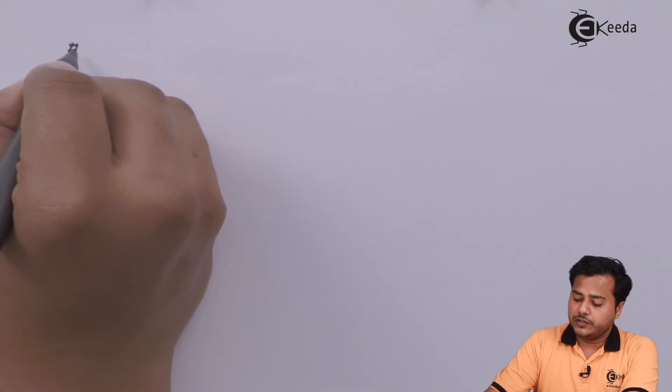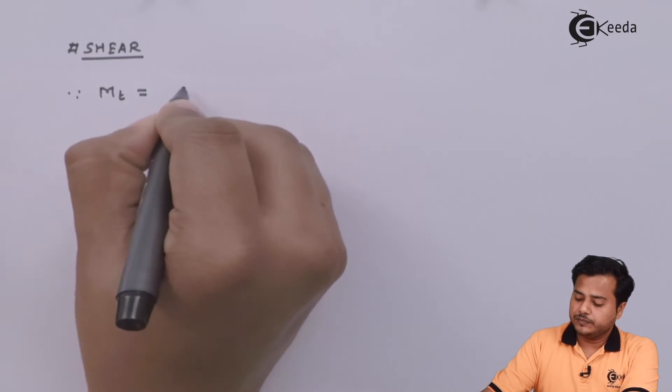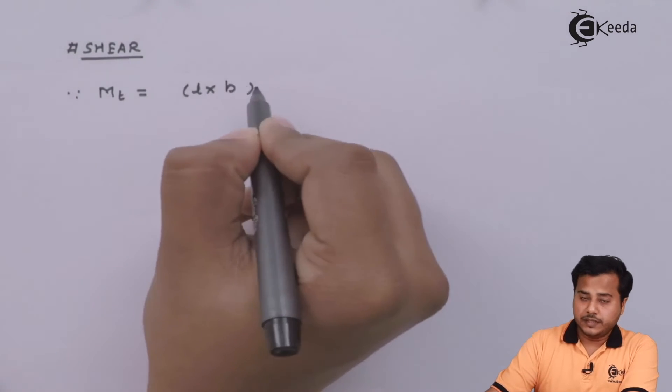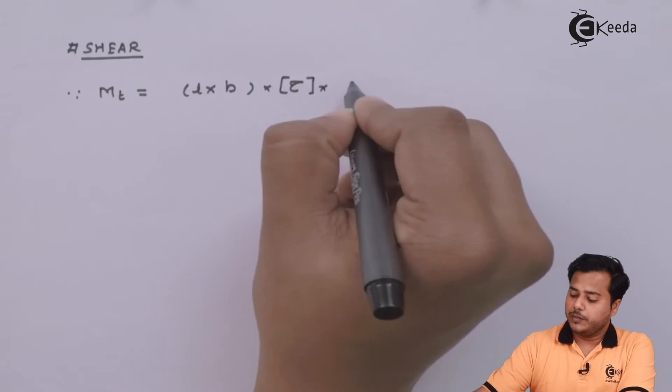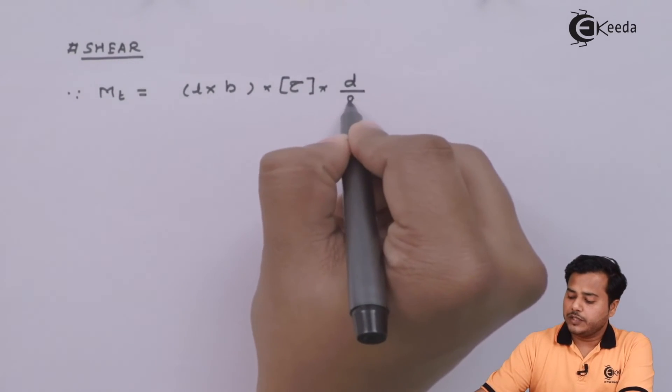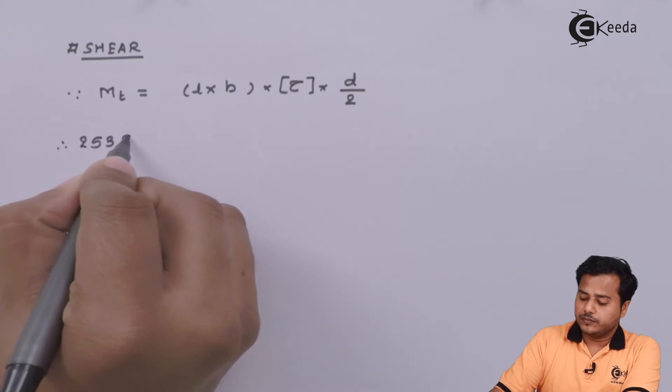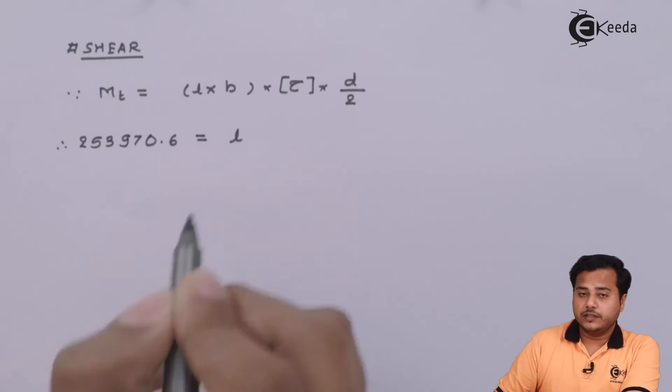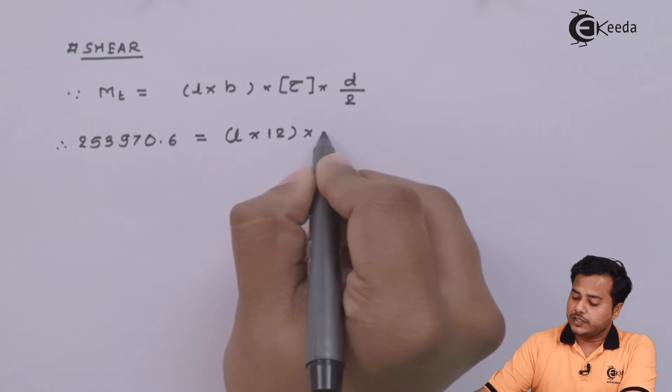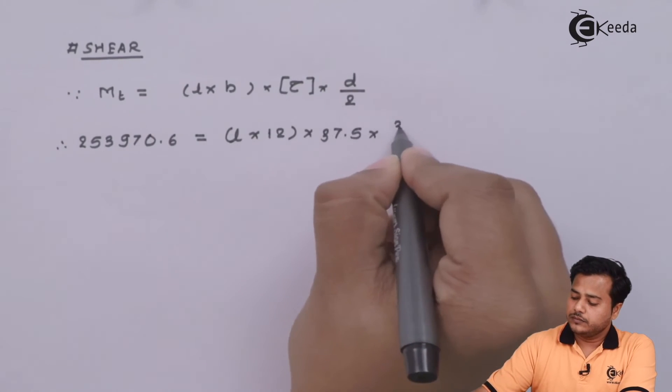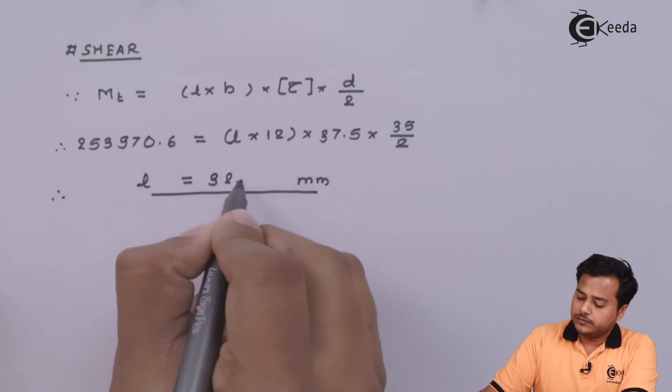We know that a key will fail under shear as well as in compression. Let us consider shear first. Torque transmitted is given by length times breadth times allowable value of shear times diameter of shaft divided by 2. MT = l × b × τ × d/2. Length which is unknown, breadth is 12, allowable value of tau is 37.5. As we solve this, we get parameter L equal to somewhere around 88 millimeter.